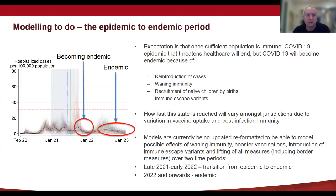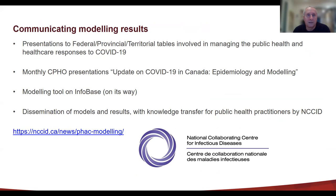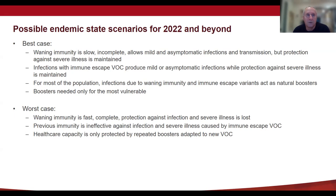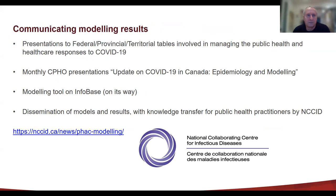We have end-state scenarios — best-case ones in which waning immunity is slow, and worst-case ones in which it is fast. When we know more about that, we'll be better positioned to know how to tackle this — whether with boosters, allowing natural infection for natural boosting, or otherwise. We will need more information to model this beyond just a scenario. For those interested, we have a lot of this information on the National Collaborating Centre for Infectious Diseases website.